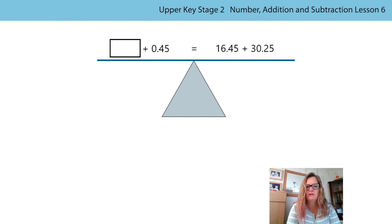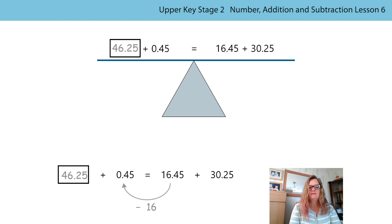So I think I might choose to redistribute from this addend. This addend is 16 more than this. So if I'm going to subtract 16, what do I need to do to the 30.25? That's right, I will need to add 16. So it will become 46.25. So this balancing equations and solving missing numbers problems is all about spotting what's the same. What do you notice? So always take a really careful look at the calculations.